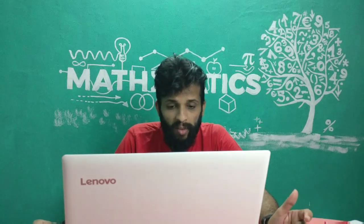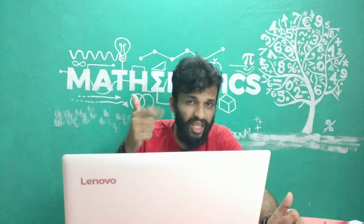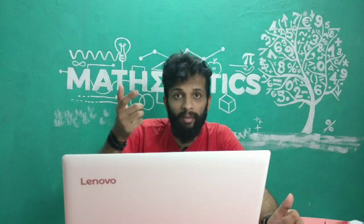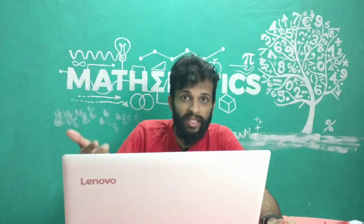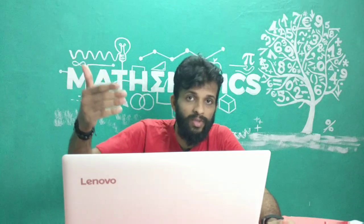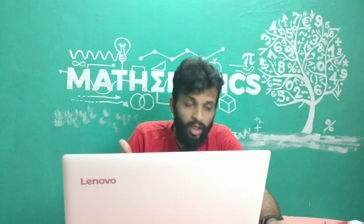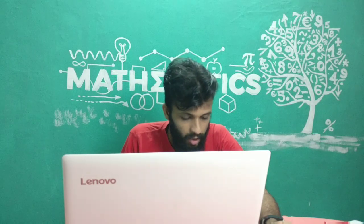Question 4c is an AP word problem: a man saves 16,500 over 10 years, each year saving 100 more than the previous year. Find the amount saved in the first year and the last year. The total savings Sn equals 16,500, n equals 10, and d equals 100. Substituting in the Sn formula gives a equals 1200 and the 10th term a10 equals 2100.